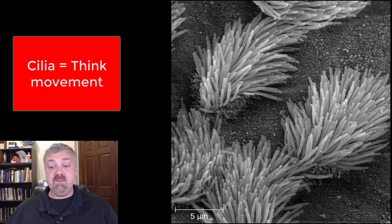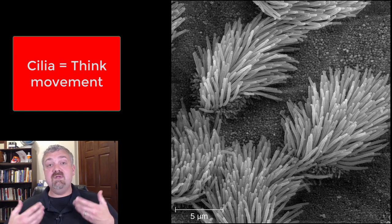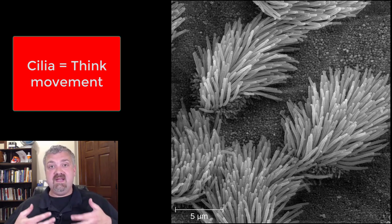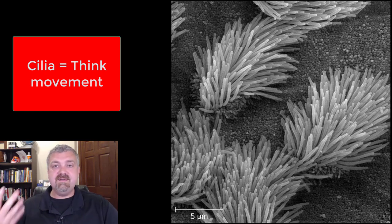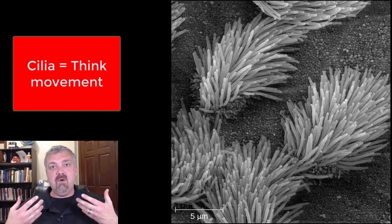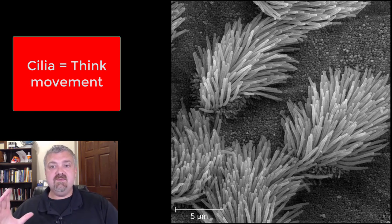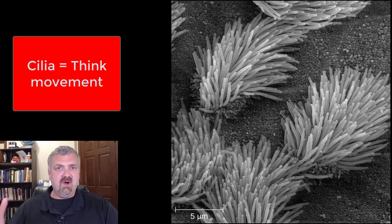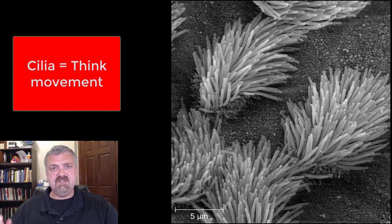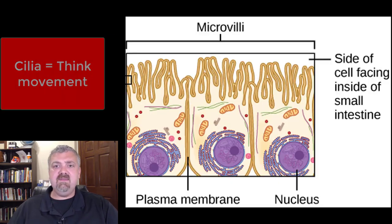When we get to the respiratory system, we'll cover the mucus or ciliary escalator that contracts and beats and carries mucus and all the dirt, dust, and pathogens up your throat so you can either expel it — spit it out or swallow it. That's what cilia do. Our primary concern is the cilia that actually contract and move — the motile cilia.